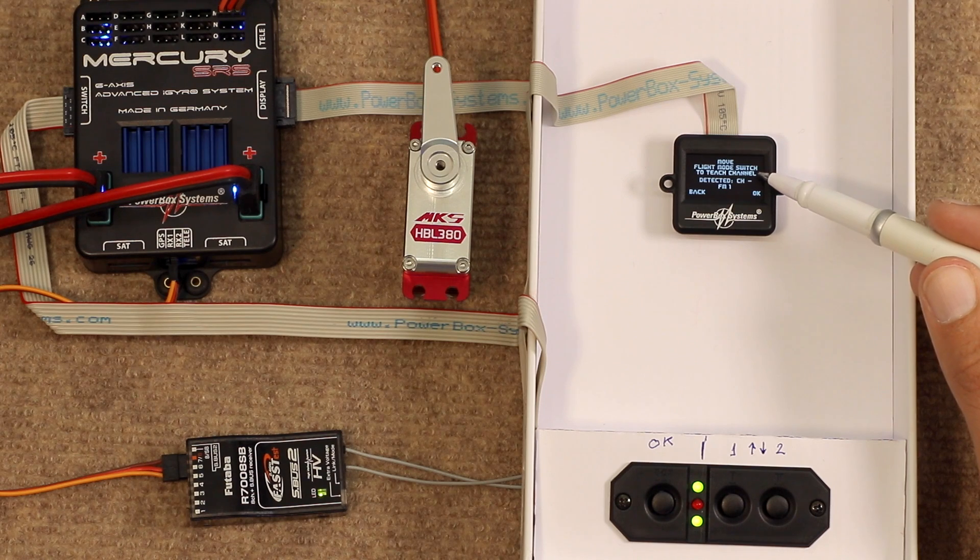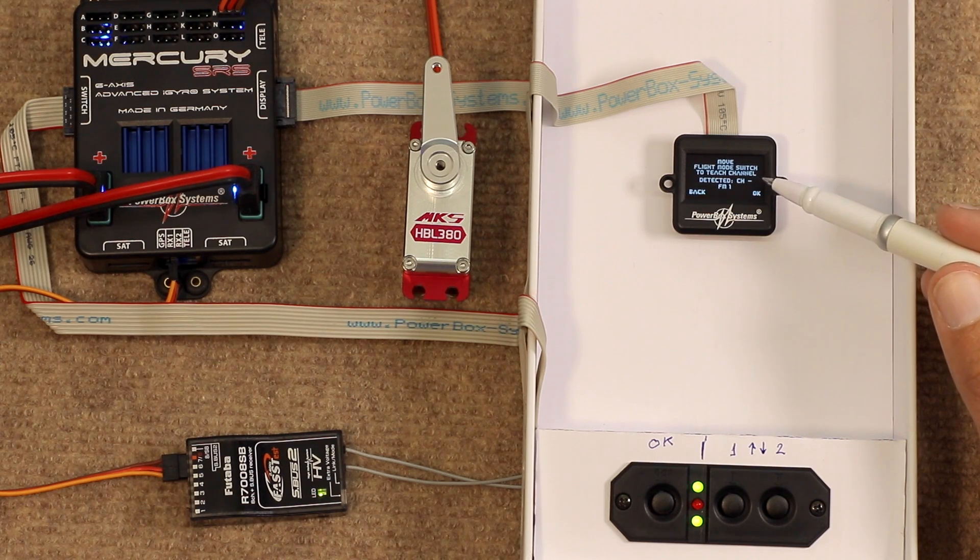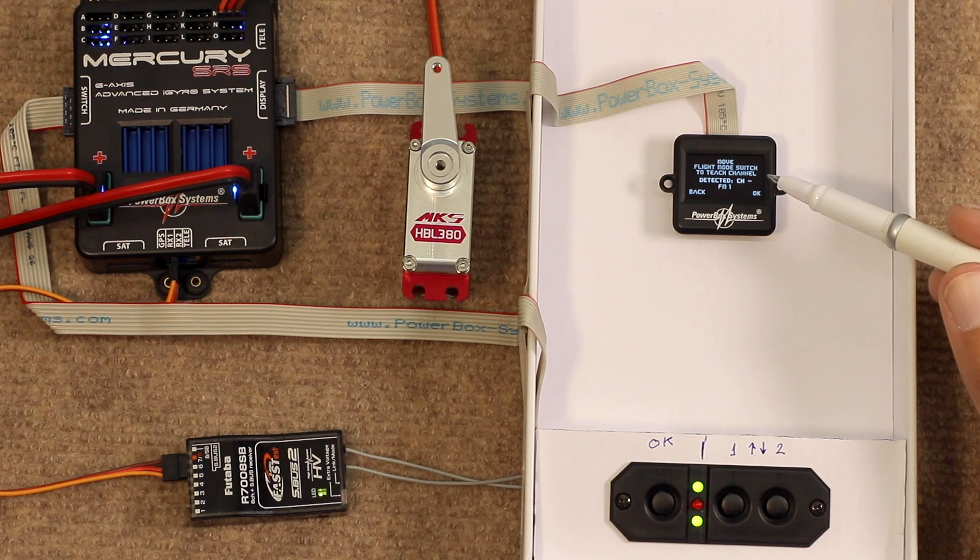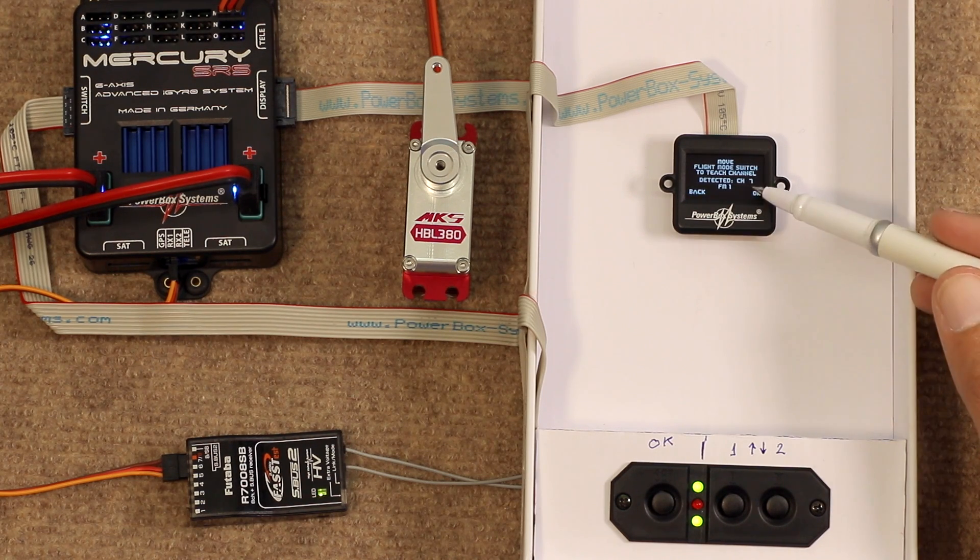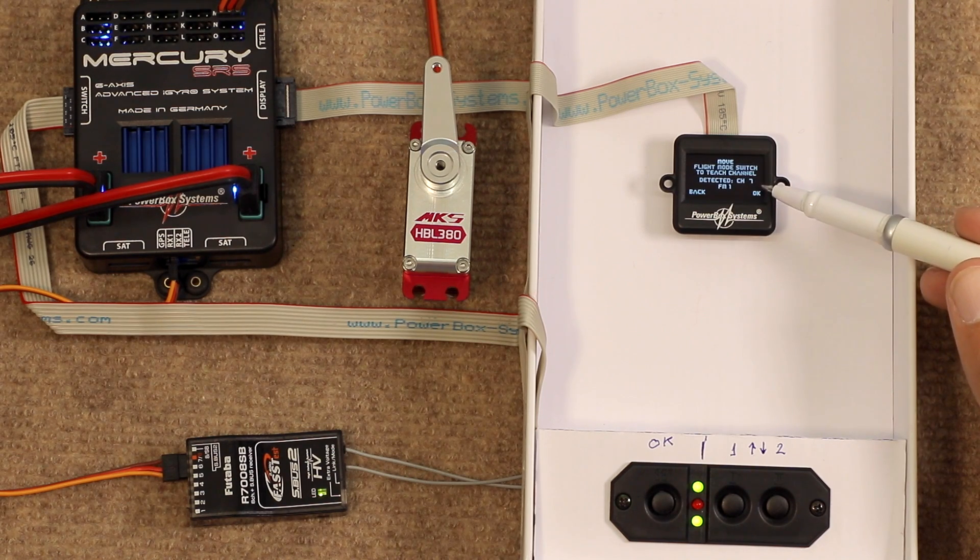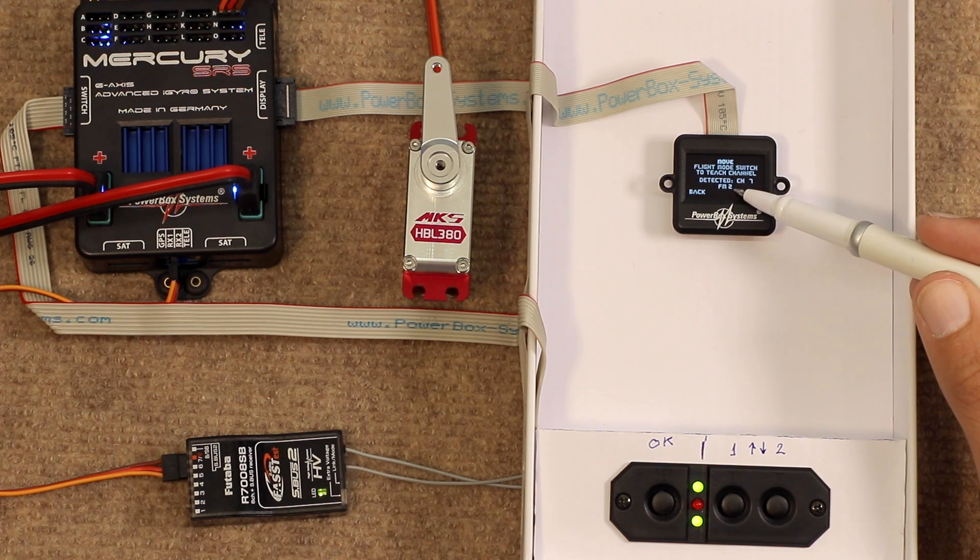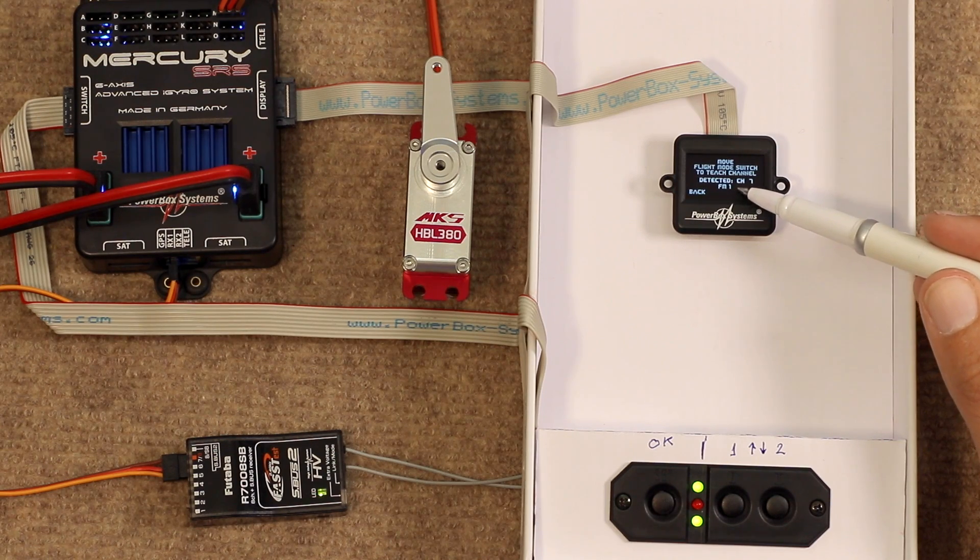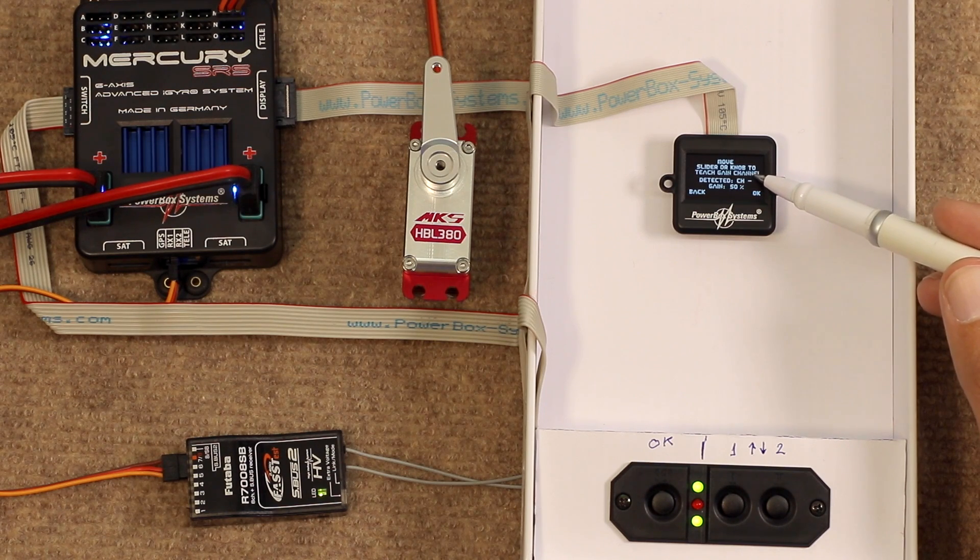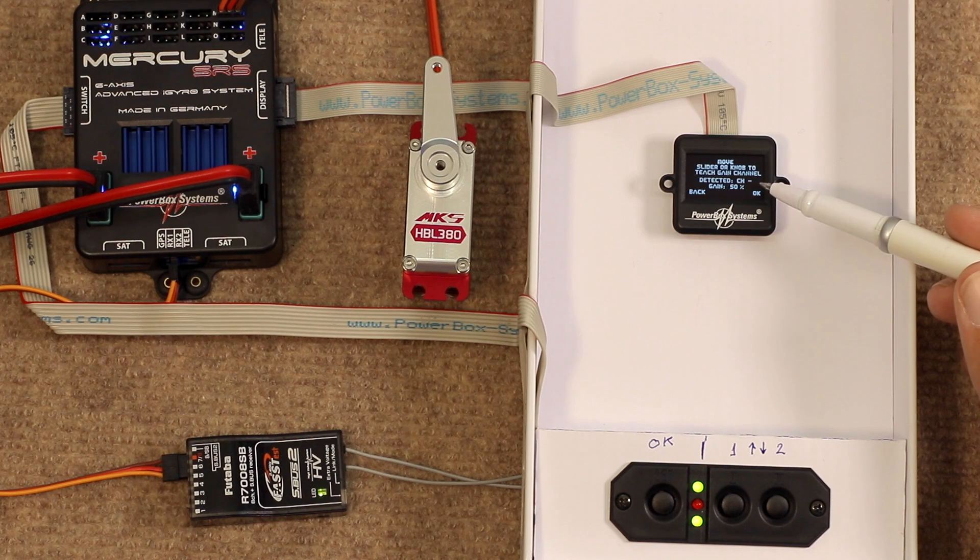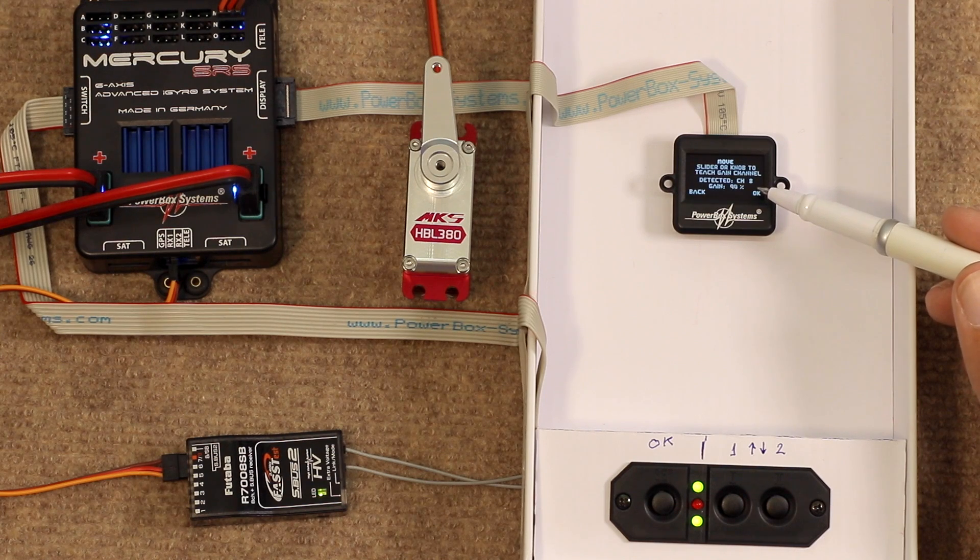Flight mode switch to teach channel. So we've set up in the transmitter one channel which is controlled by a three-way switch which is going to turn the gyro off, on or on. So if we simply flip that, it detects it automatically as channel 7 and you can see it flipping through flight mode one, two and three as we go through the sequence. Move slider or knob to teach gain channel. So we've also assigned a channel on the transmitter for the gain on the gyro. So as we move that, it also automatically detects what channel that is, channel 8.